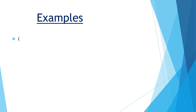Let's see some examples. First one is plus 4 into plus 2. Here both are positive, so the sign will be positive. And 4 twos are 8, so the answer is plus 8. Next one is minus 2 into minus 6. Here both are negative, so as per the golden rule the sign will be positive. And 2 sixes are 12, so the answer is plus 12.